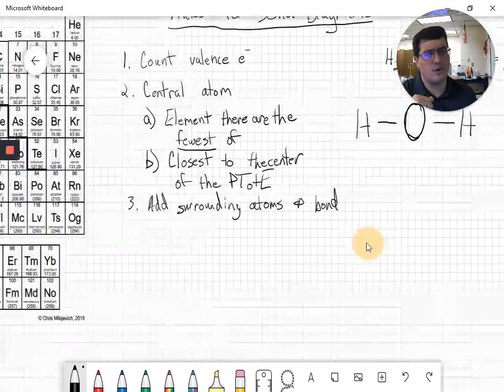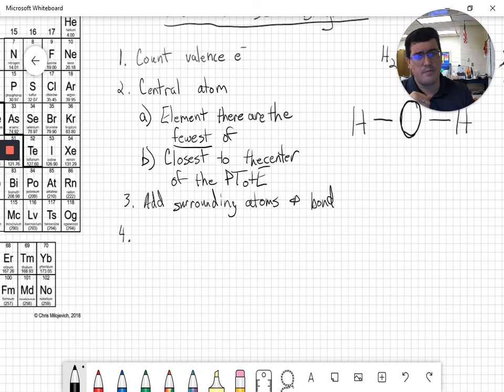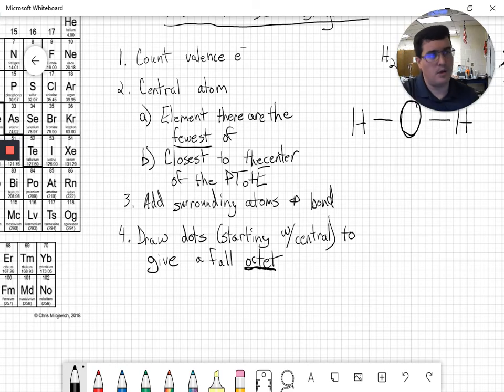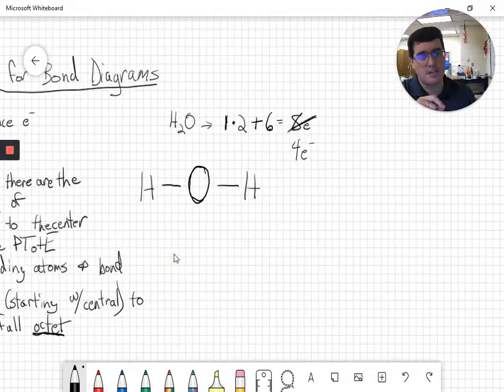So where the heck do those four electrons go to? Well, that's step four. Draw dots, starting with your central, to give a full octet. This is called the octet rule. It's the idea that every atom in a diagram wants to have eight electrons. So we go up here and we look at our central atom, we look at oxygen.